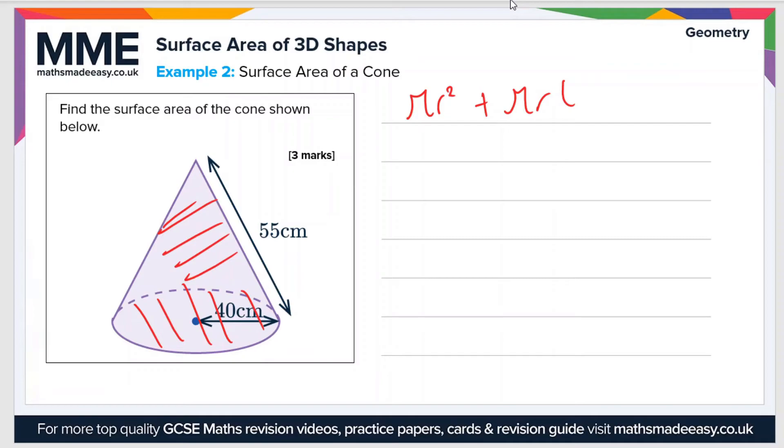So if we plug our values in, we get pi times r squared, which is 40 and it's squared, plus pi times 40, which is the radius, times L, which is the slanted height, which is 55. So if we add all those together, then we get a value of 11,938.1 meters squared. So that's an answer to one decimal place.